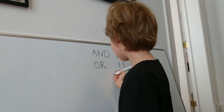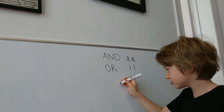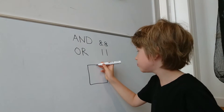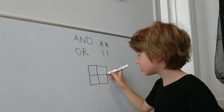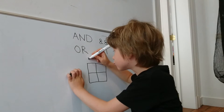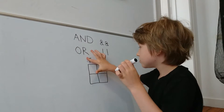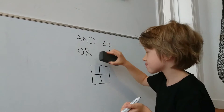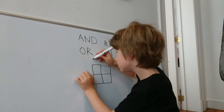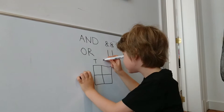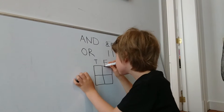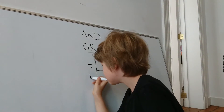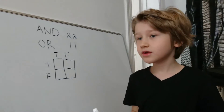If I want to write a truth table, just a two-by-two table — one vertical, one horizontal — I'll put true and false at the top and true and false on the side.